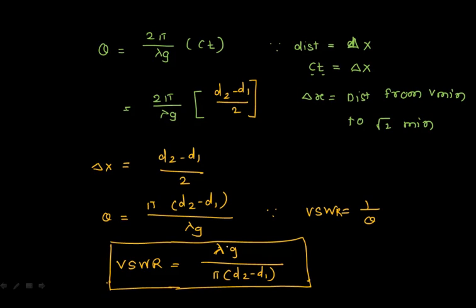We have now covered how to measure voltage standing wave ratio for both lower and higher values. For lower values, a simple method using the microwave setup is sufficient. For higher values, the double minimum method is used. This completes the topic of voltage standing wave ratio measurement.